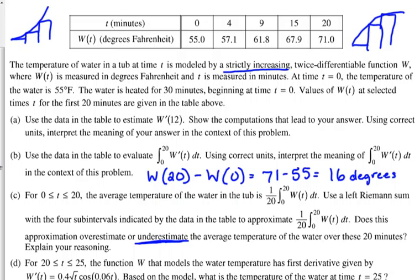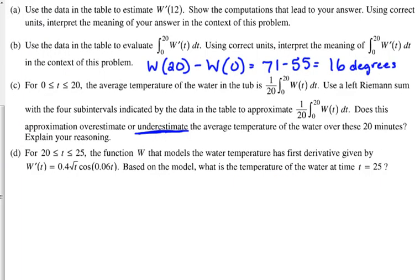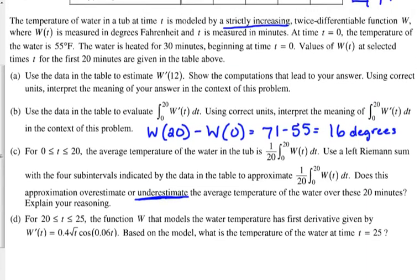All right, part D, it says between time 20 and 25, so beyond the data that we have in the table, the function that models the water temperature has the first derivative given by this function. Based on the model, what is the temperature of the water at time 25? Well, to find the temperature at time 25, we know the temperature at time 20. It is 71 degrees, so we start at 71 degrees, plus, what do we need to use?